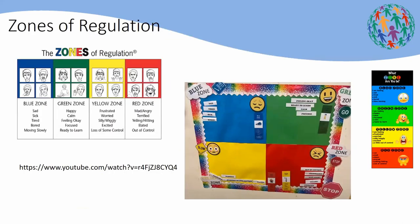A strategy we've been using in school — and many schools are using it now — is the Zones of Regulation. It's a programme that's really recommended for children who have autism, children with speech and language needs, and children with behaviour needs. It's a programme that helps children understand and regulate their emotions.